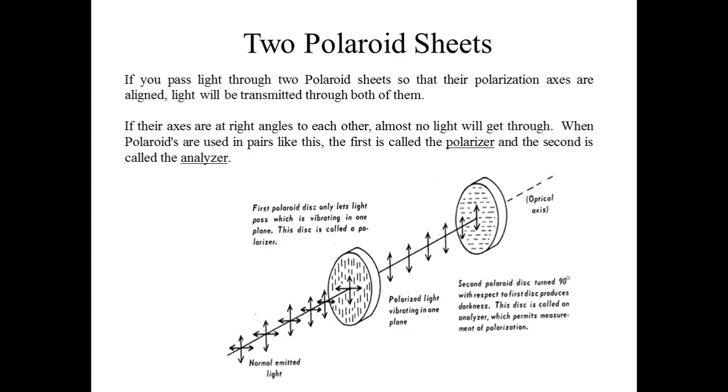The first polaroid disk only lets light pass which is vibrating in one plane. This disk is called the polarizer. If we turn the second polarizer 90 degrees with respect to the first disk, then almost no light will pass through it. The second disk is also called the analyzer, which permits the measurement of polarization.